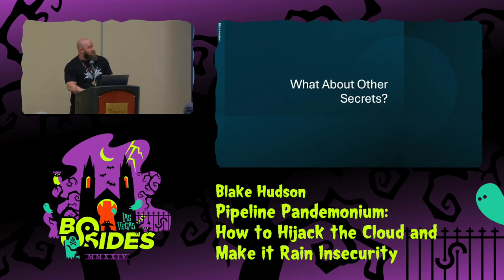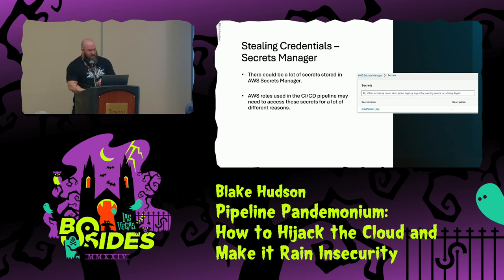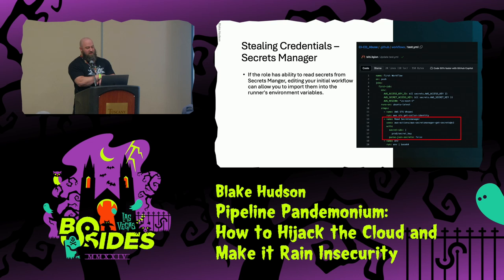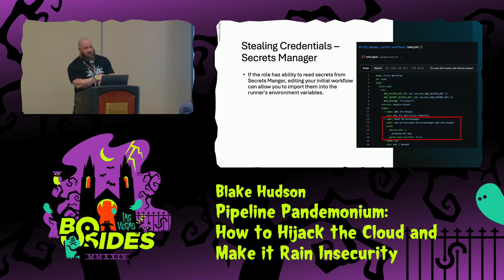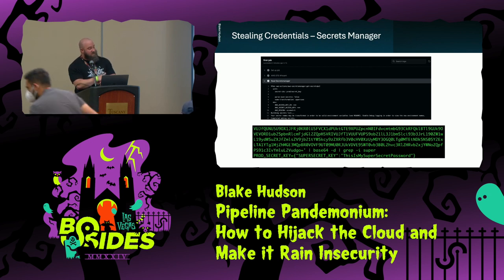A lot of organizations use Secrets Manager as well. Reading through those YAML files, you might see exactly what secrets they're pulling in, and you could copy that same code into your own YAML file. In my AWS lab, I created a prod secret key and a new branch with a YAML workflow, pulling in those secrets. The highlighted steps show how to access Secrets Manager, assuming you have the IAM permissions. It pulls secrets into your environment variables for you to steal — so just because they're stored in a better location doesn't mean you can't access them. Base64 encode it and you can see the prod secret key, super secret key, and super secret password.